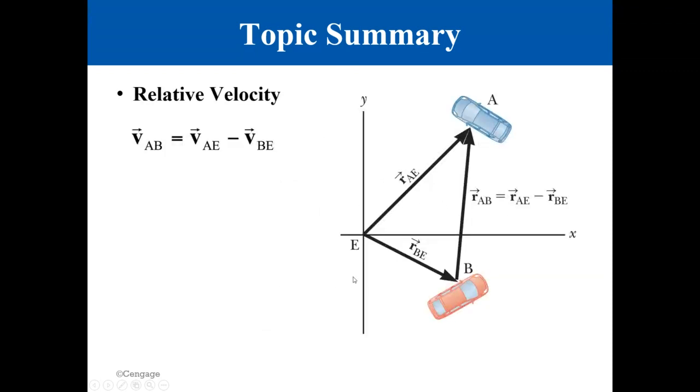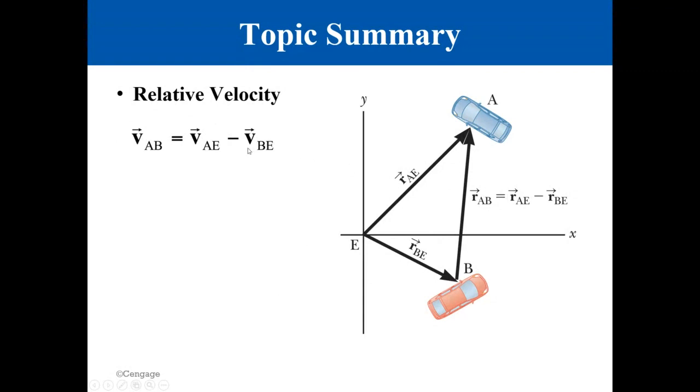For relative velocity, you need just to relate the vectors for describing the positions for two objects relative to each other. And from there, you get the velocity vectors.